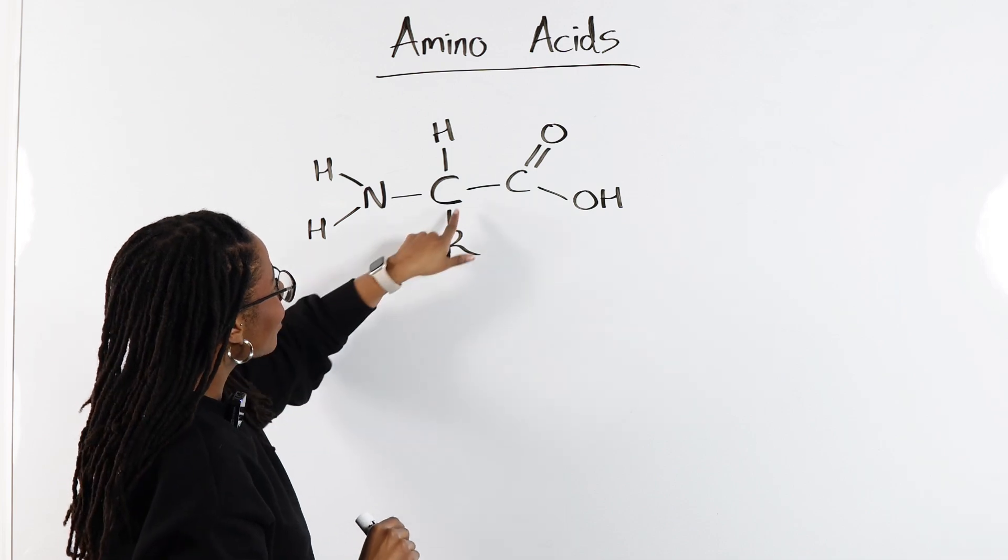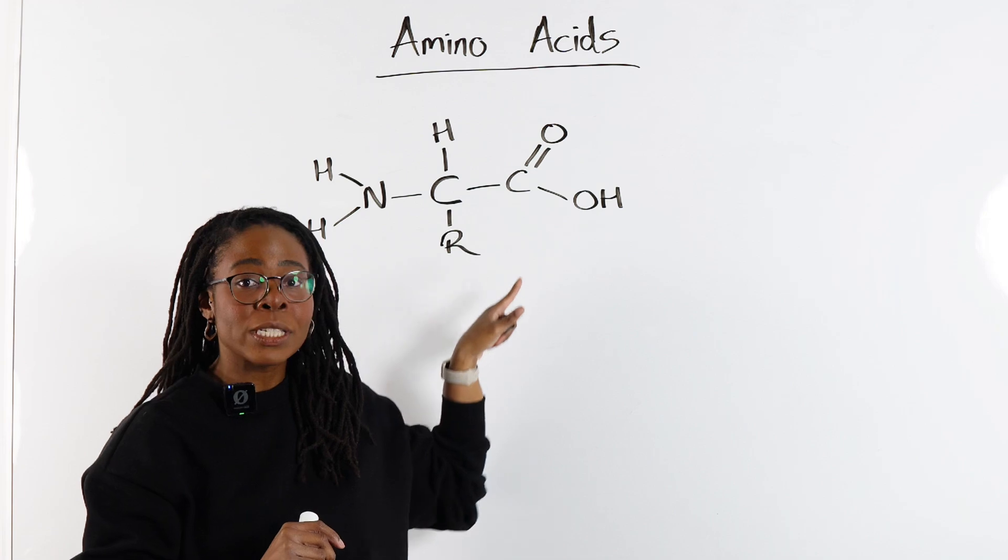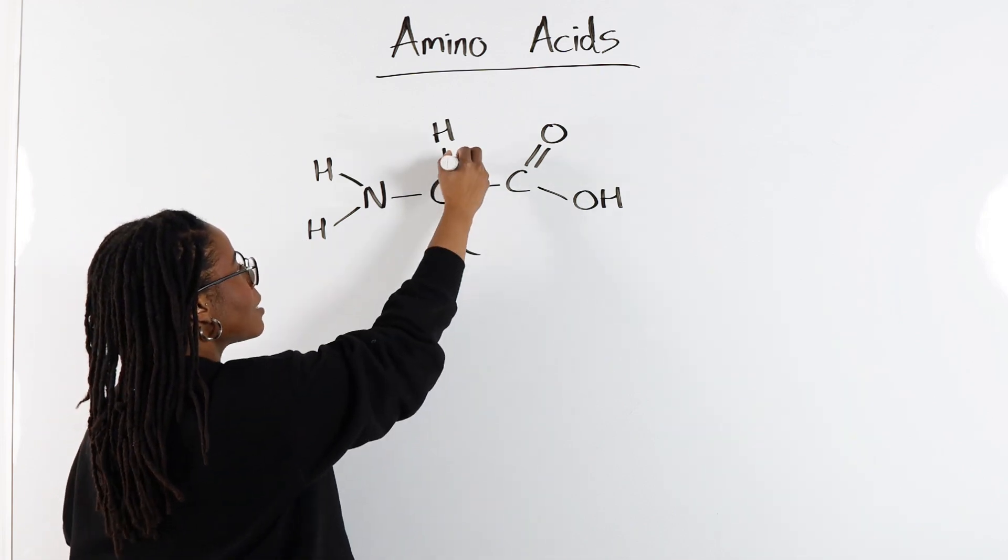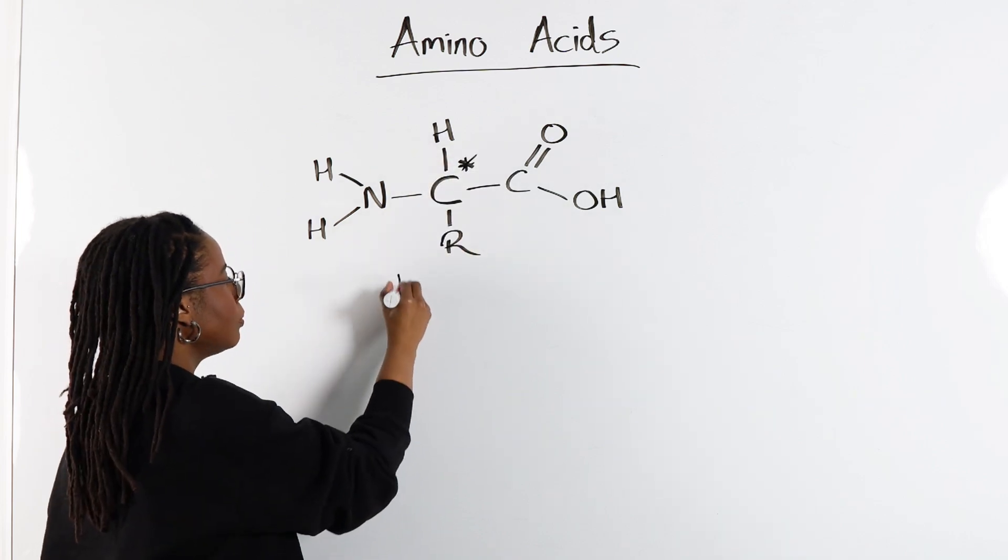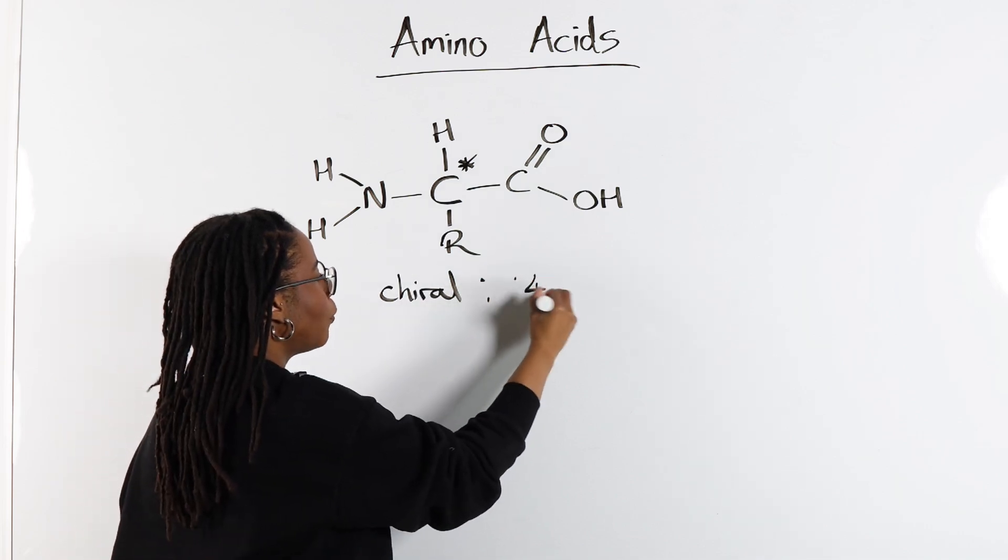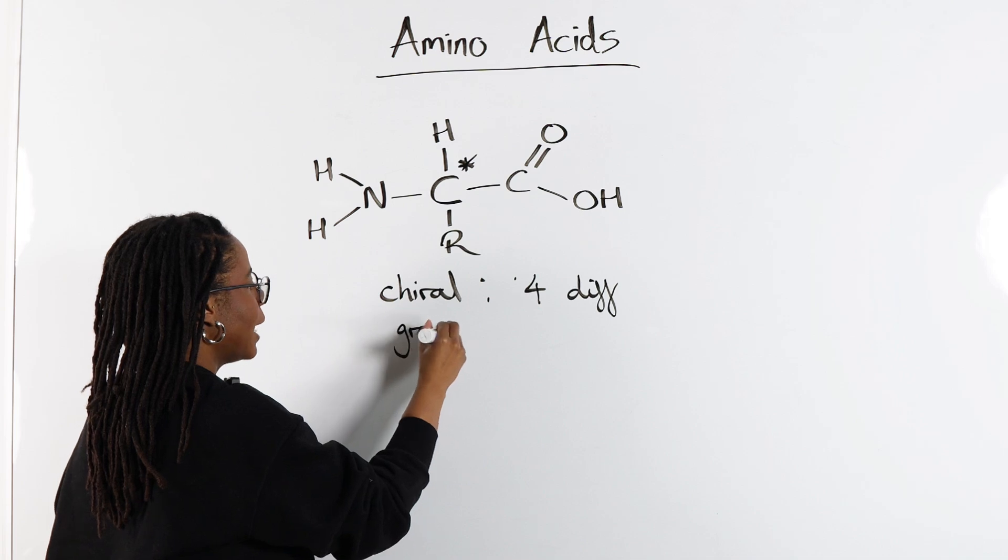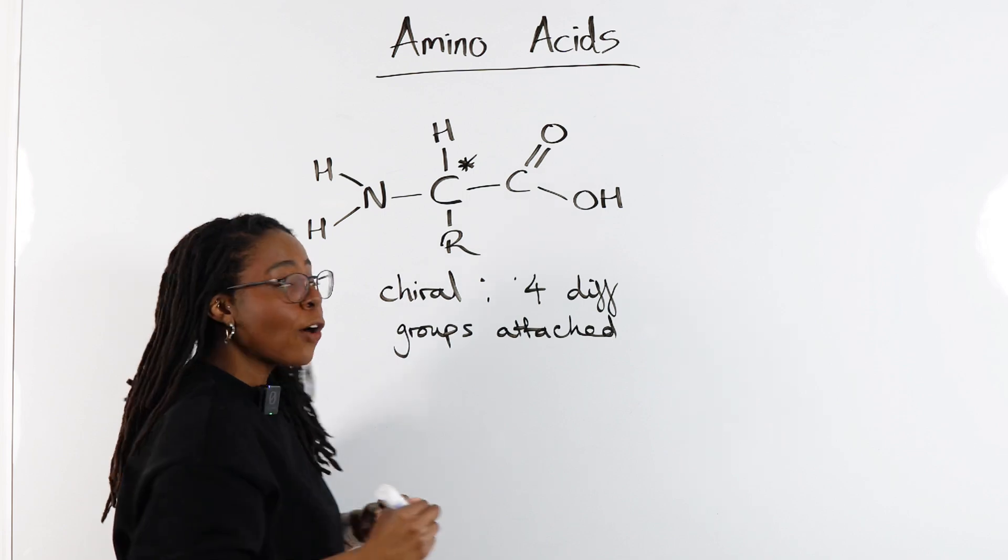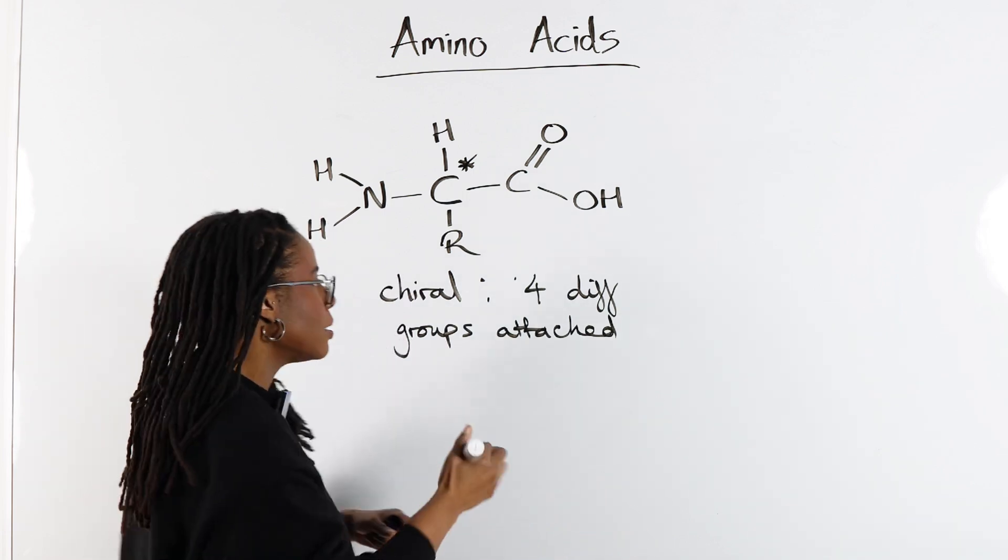Now if we look at this carbon in the middle, we can see that there are four different groups attached to that carbon, which means that this carbon is going to be chiral because we've got four different groups attached. This means that we are going to have optical isomerism or these are going to exist as enantiomers. So we'll have non-superimposable mirror images.